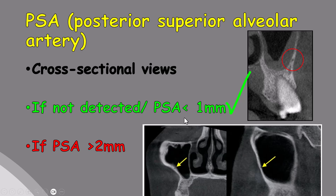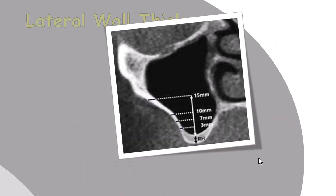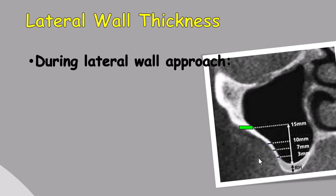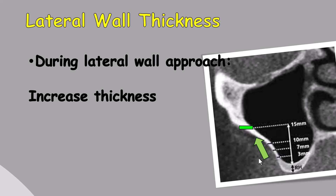To avoid the artery, modifying the lateral window approach to a more superior position may be considered, though the thickness of the lateral wall can limit this. The thickness of the buccal bone on the lateral wall is important during the lateral wall approach. Wall thickness increases from the crestal to the apical region. A thin buccal bone of less than 1 mm is considered favorable, while a thickness greater than 2.5 mm is unfavorable with increased chances of Schneiderian membrane perforation.